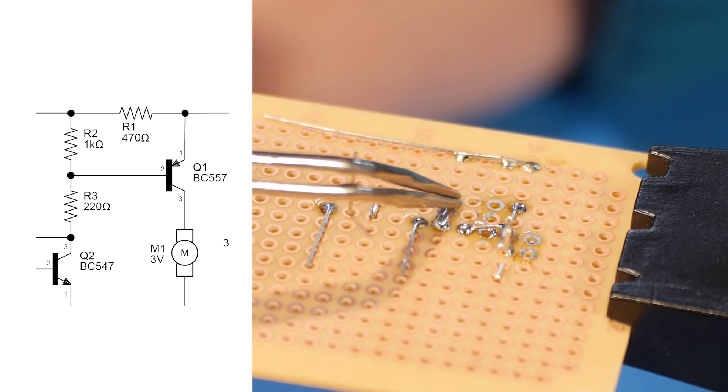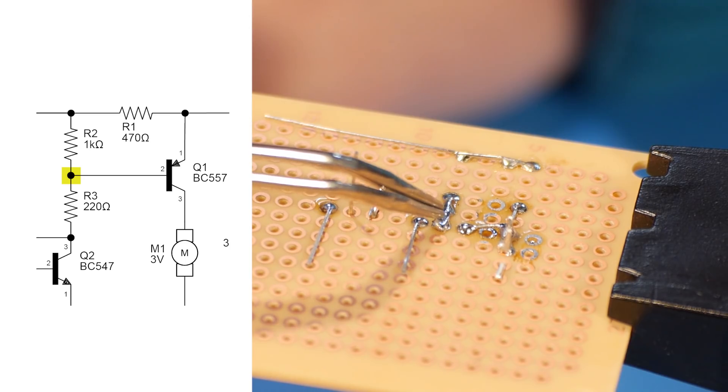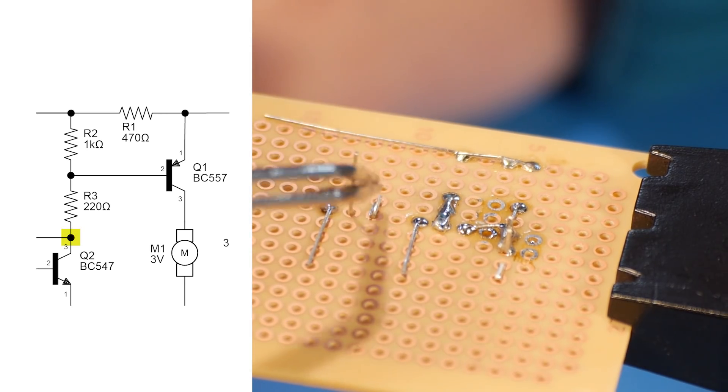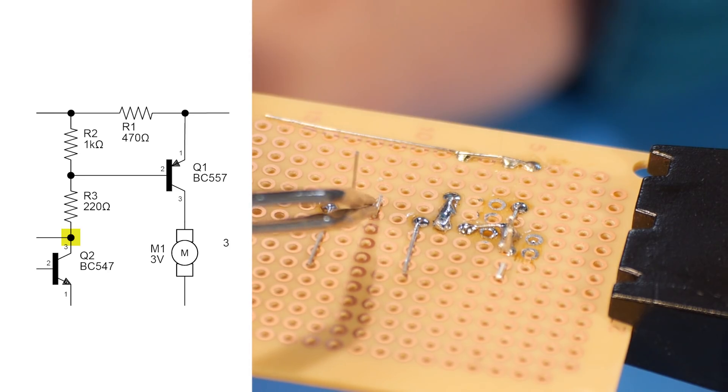Here, this big blob, we have the connections of pin two, of Q1, as well as R2 and R3 all connected together.